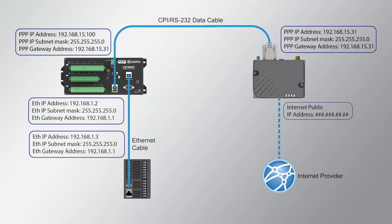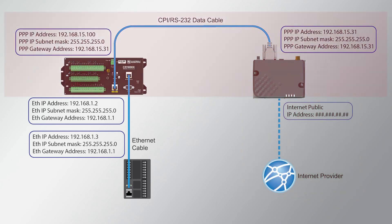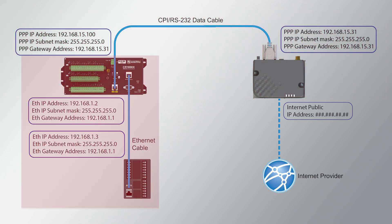This image shows the complete network. The RV50X communicates with its internet provider and has a PPP connection with the CR1000X, which also has an Ethernet connection with the PLC. How many networks are shown here? The answer is three: the internet as the external network accessible through the RV50X, the PPP connection between the RV50X and the CR1000X, and the Ethernet connection between the CR1000X and the PLC. And that's how a simple network is created around a data logger.